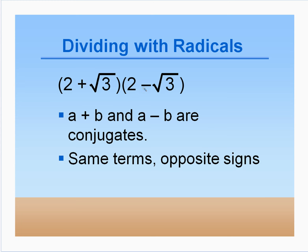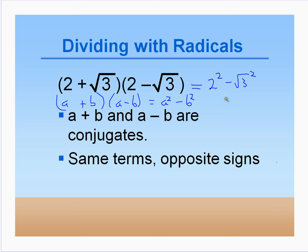2 plus root 3 and 2 minus root 3 are called conjugates of each other — they have the same terms but opposite signs. When you multiply these, it's in the form (a + b)(a − b), which gives a squared minus b squared. So this is 2 squared minus the square root of 3 squared, which is 4 minus 3, which is 1. Things that had radicals in them multiplied together give a rational number — no more irrational numbers.